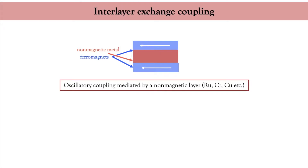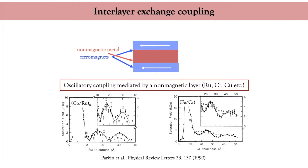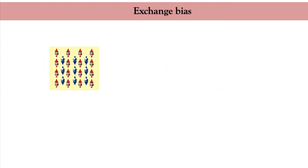This oscillatory RKKY interaction was first reported by Parkin and co-workers in ruthenium-cobalt and chromium-iron multilayers. In those figures, the authors report the value of the magnetic field needed to saturate the magnetization of the magnetic multilayers. At vanishing thicknesses the saturation field is very small, indicating the two ferromagnets are parallel. At thin thicknesses a large field is needed, meaning the two adjacent ferromagnets are coupled antiferromagnetically. Upon further increasing the thickness, the saturation field dramatically reduces again as the coupling becomes ferromagnetic. This RKKY interaction is of extremely high importance for spintronics applications.